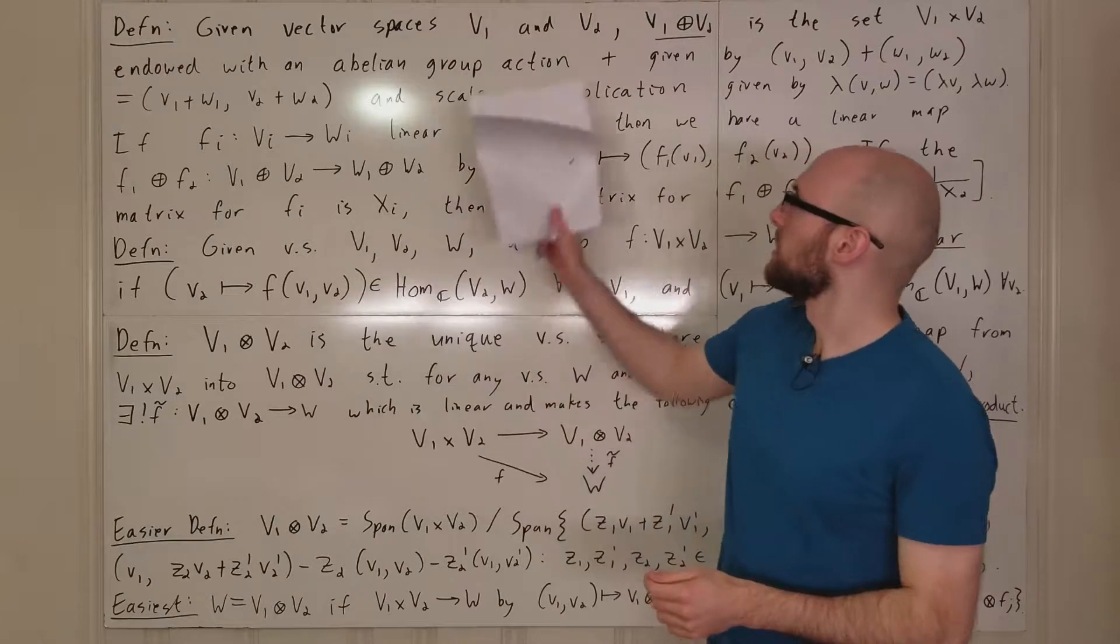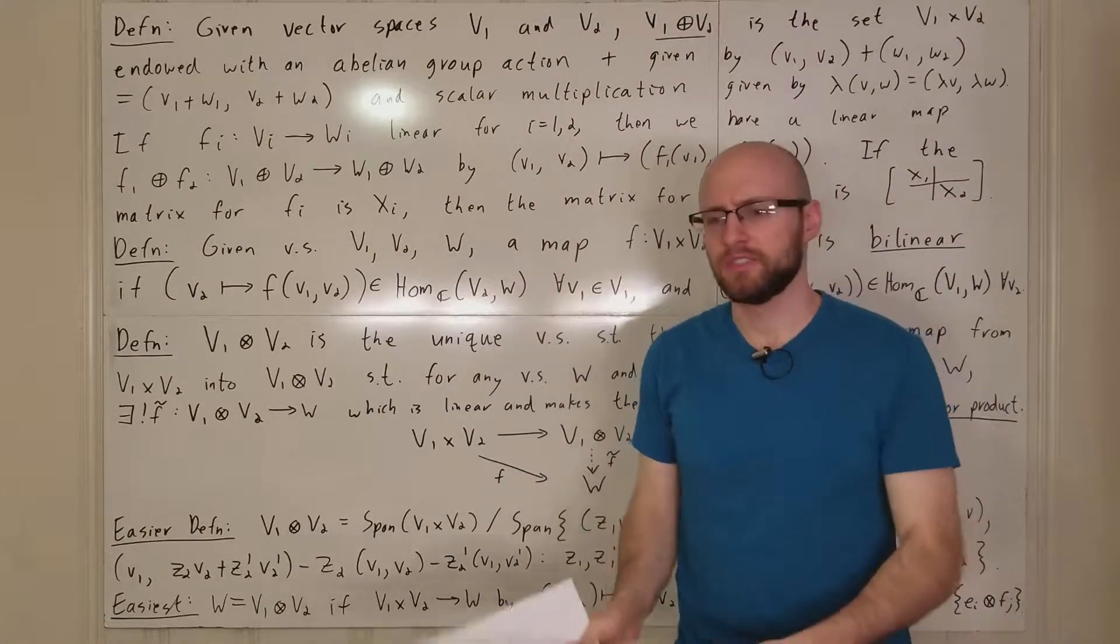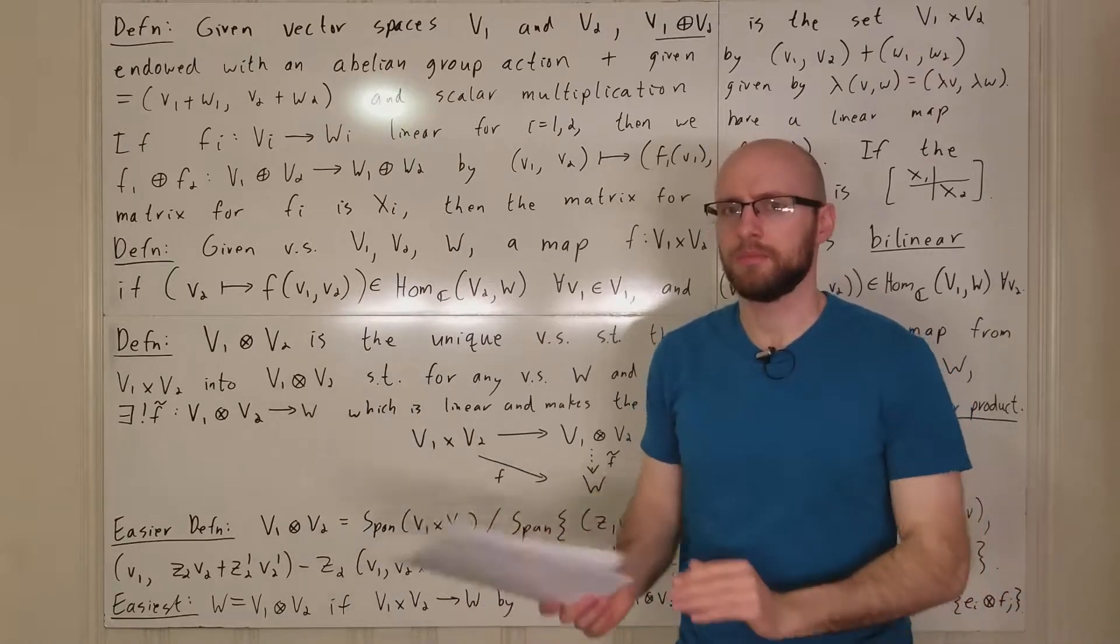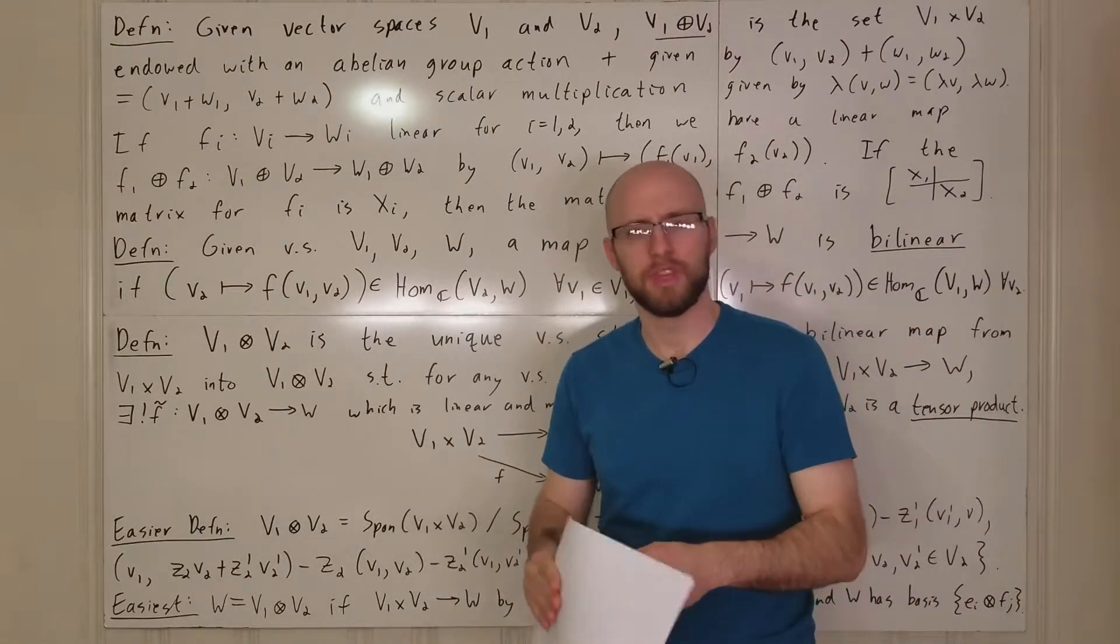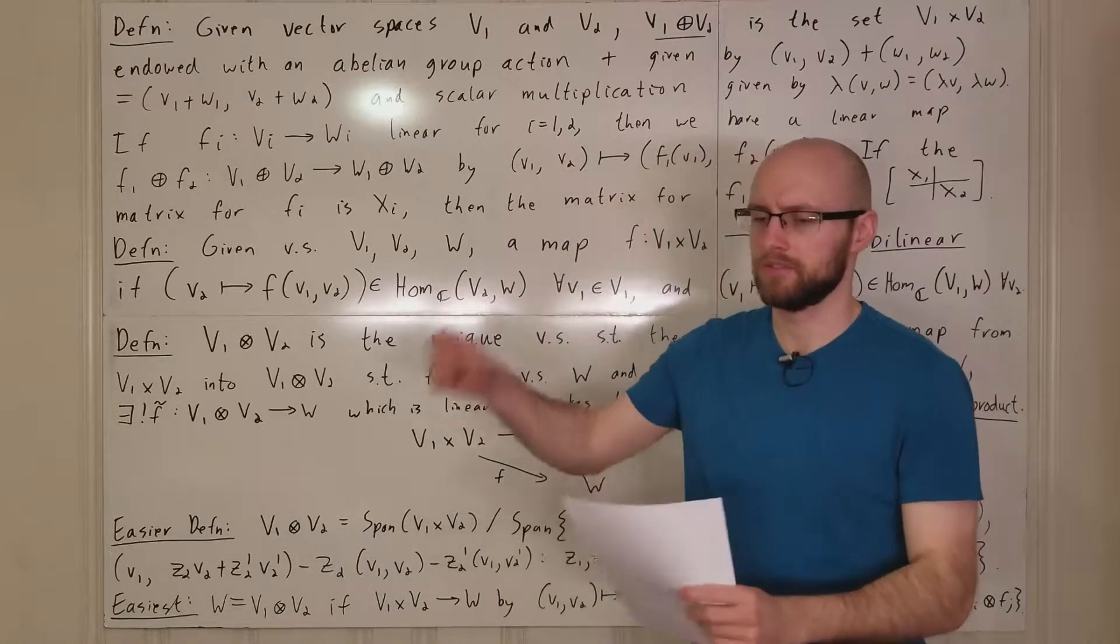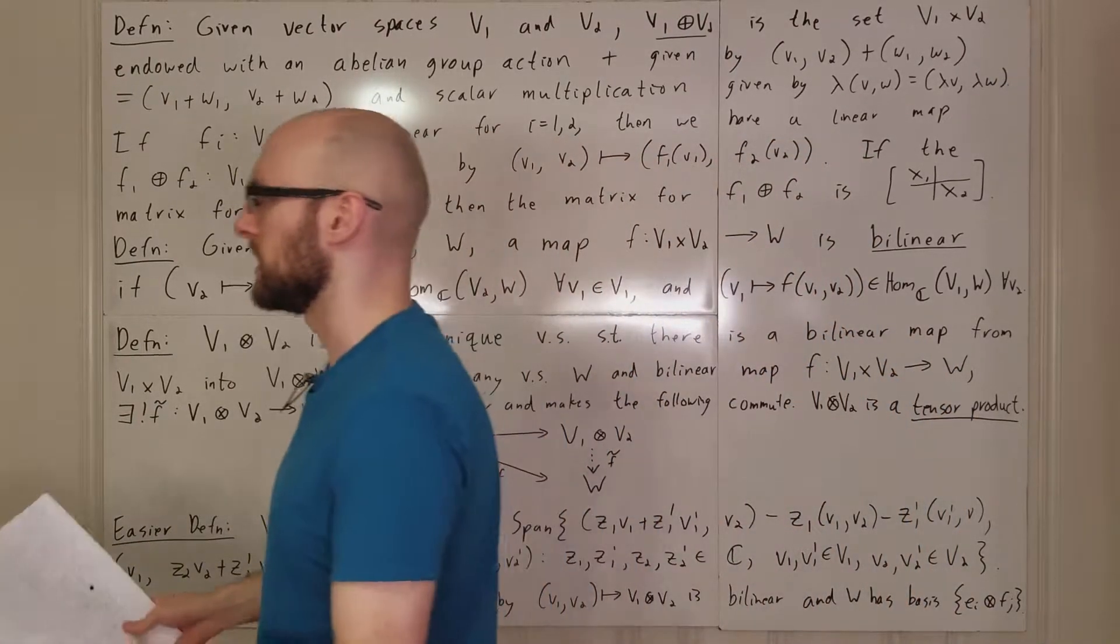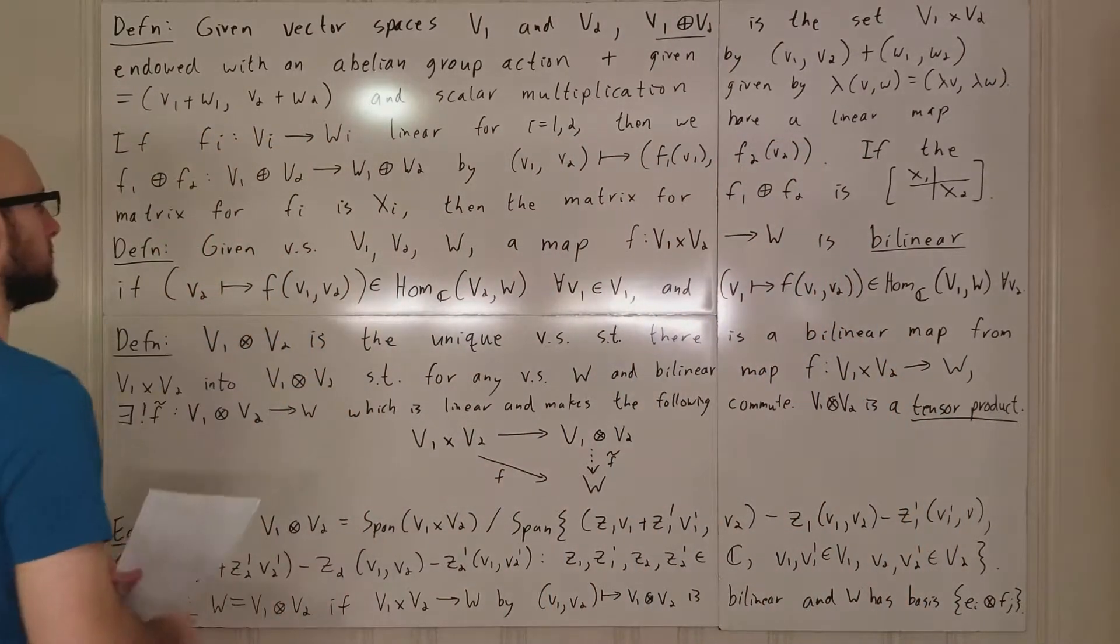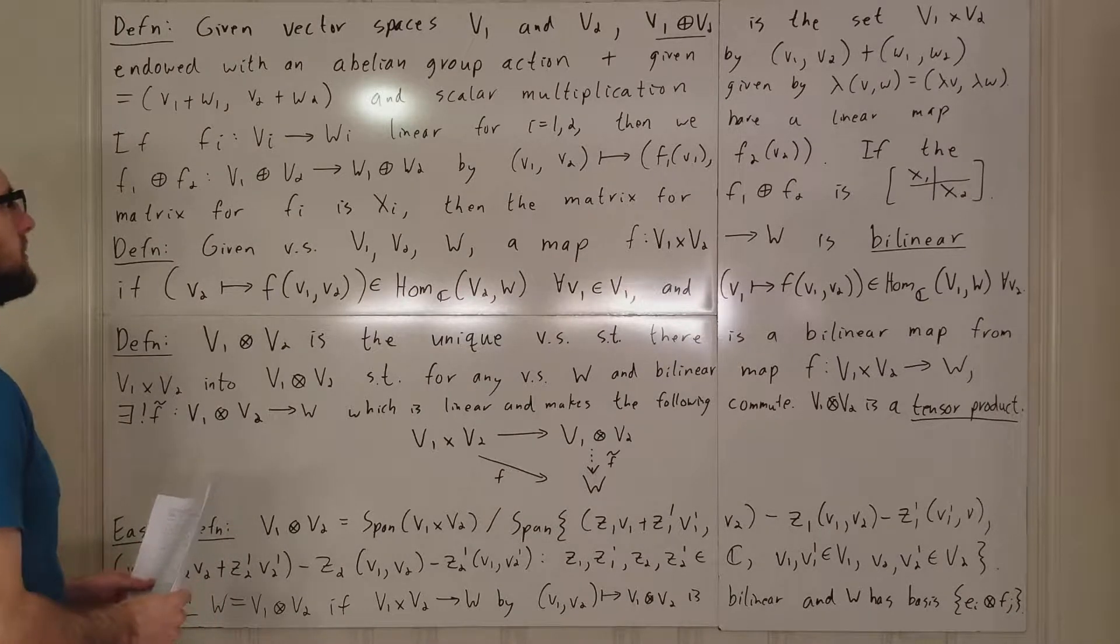And this also shows you, and another thing you can prove, is that dimensions are additive here. So the dimension of V1 plus the dimension of V2 is equal to the dimension of the direct sum of V1 and V2. In some sense, you're taking two different vector spaces, and you're just sticking them together, and not really imposing any conditions on them to interact at all. You just kind of glued them together without imposing any additional structure.